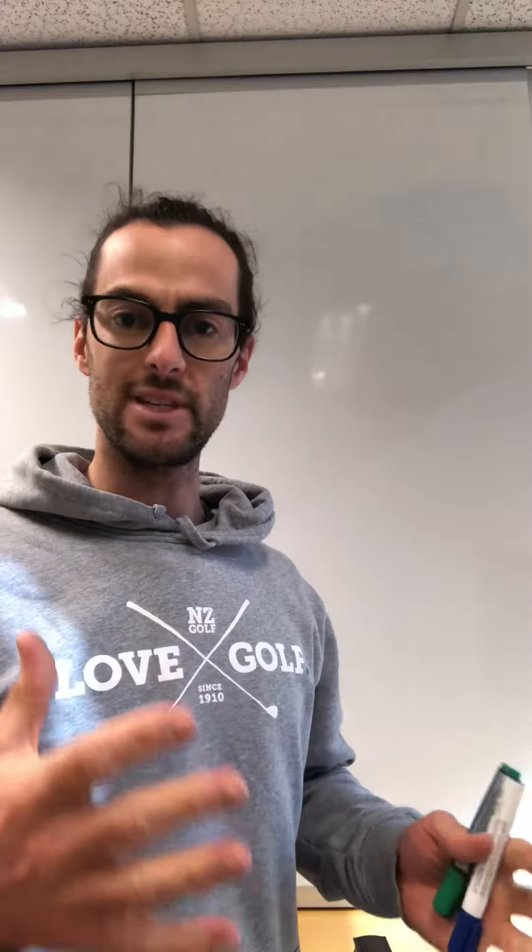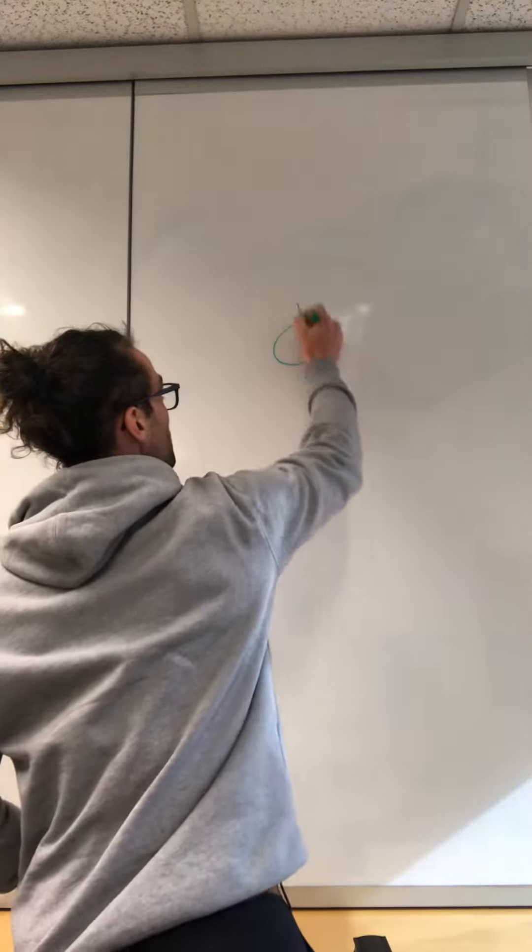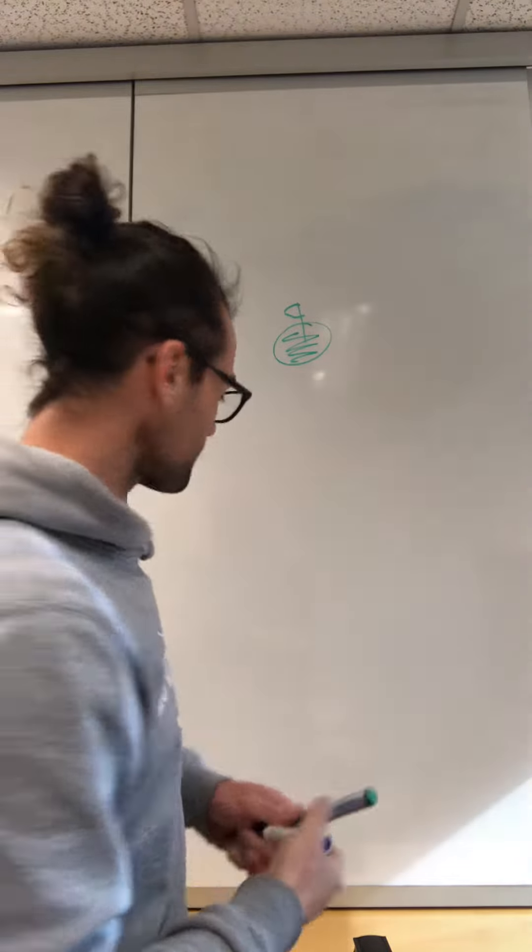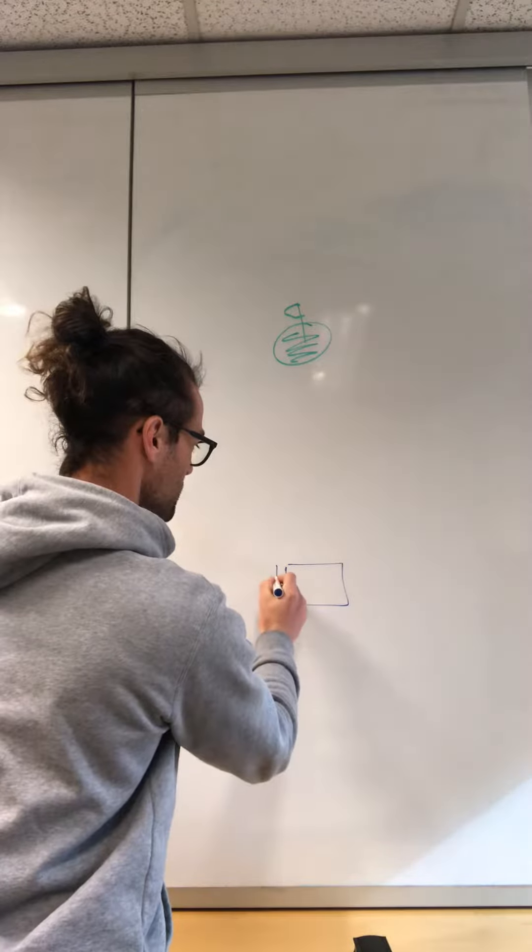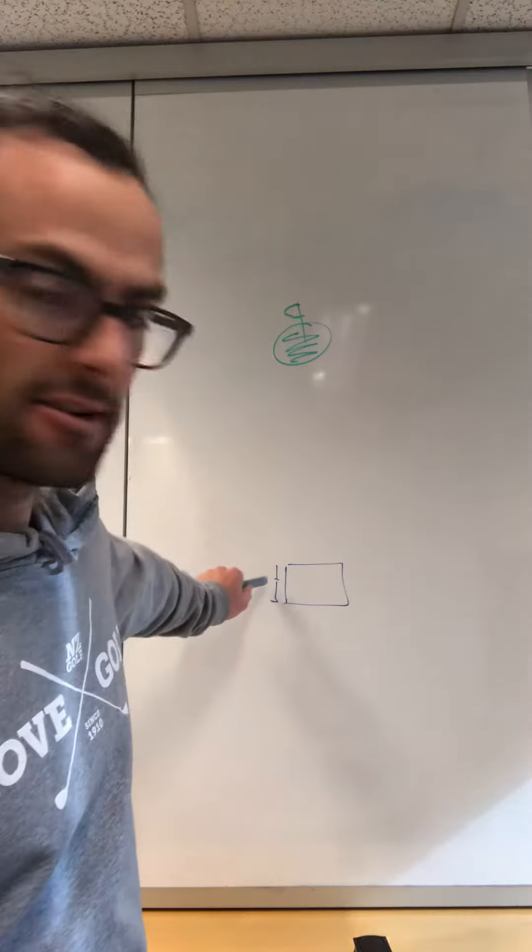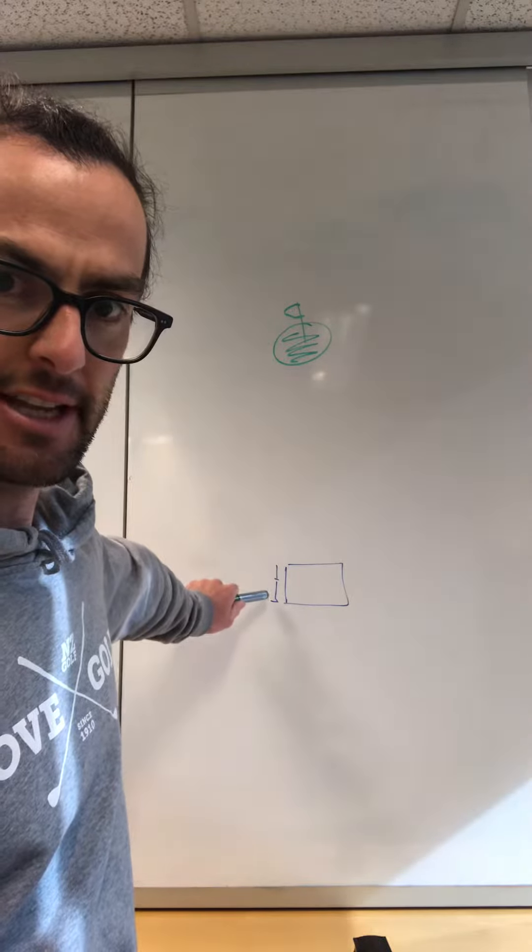So if we have our green here, and then say you're teeing off here. I've drawn two club lengths to the side to show you that's the depth of the teeing area.